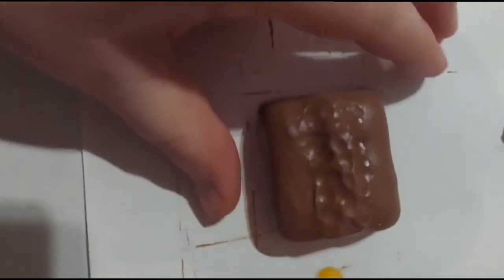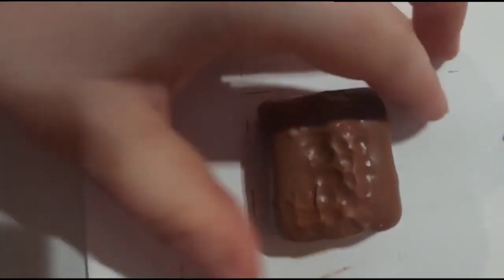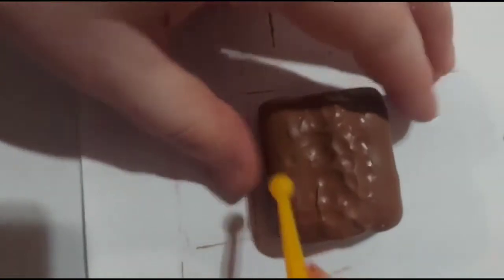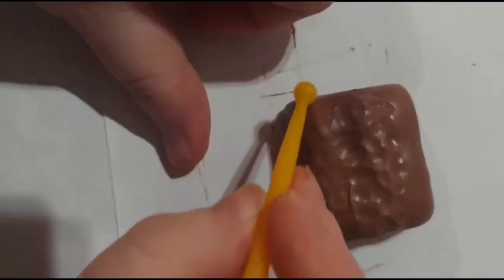Now continue to do that all the way around the chocolate piece and use your fingers to smooth out any harsh lines. You want them to look like indents, not cuts.